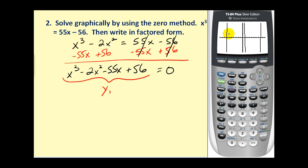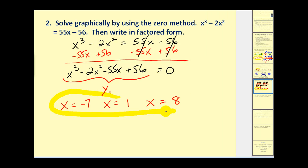After pressing graph, we don't have a perfect picture, but all we care about is where it crosses the x-axis. We can see the x-intercepts and identify them: x equals negative seven, x equals positive one, and x equals positive eight. These are the three solutions to this cubic equation.